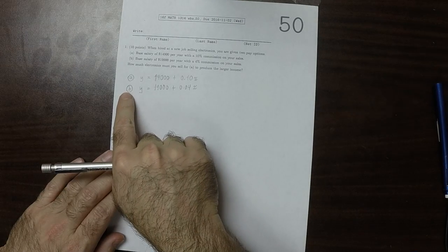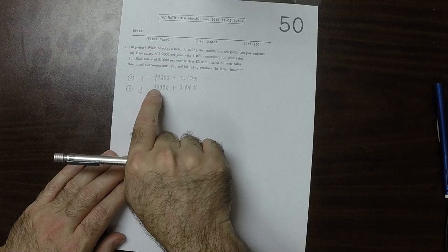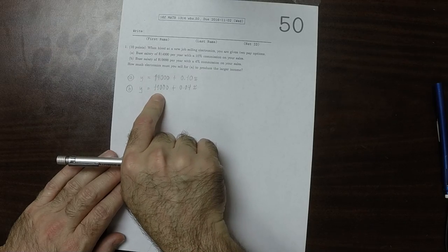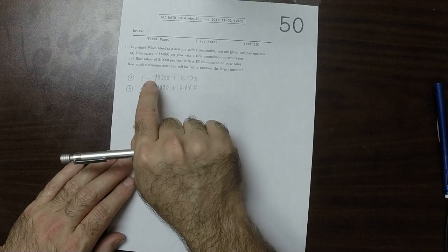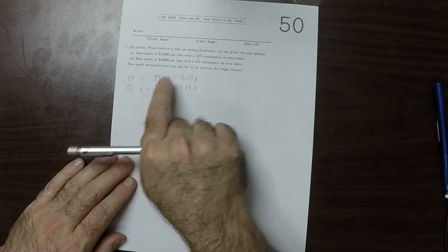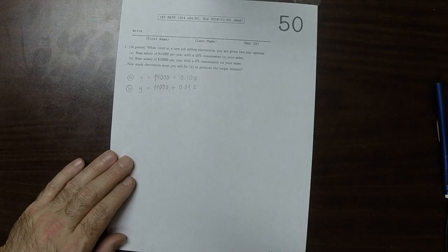So with option b, you get a higher guaranteed income but a lower commission. And with option a, you have a lower guaranteed income but a higher commission. And the question is,